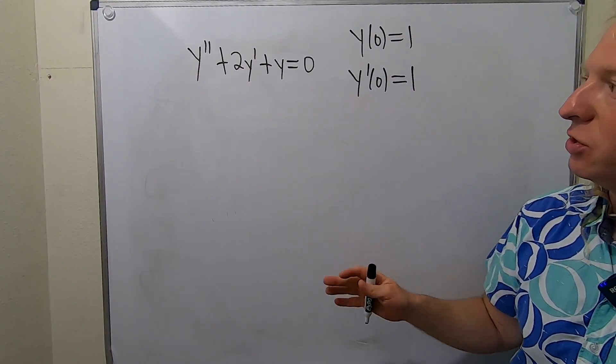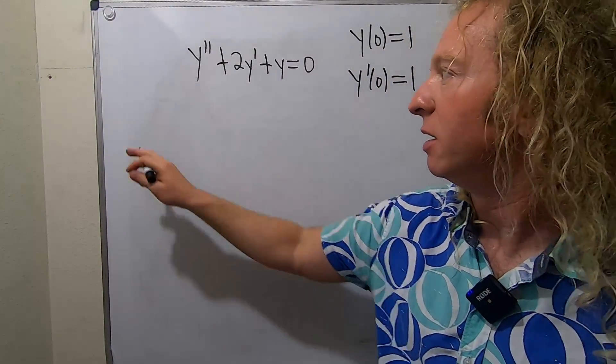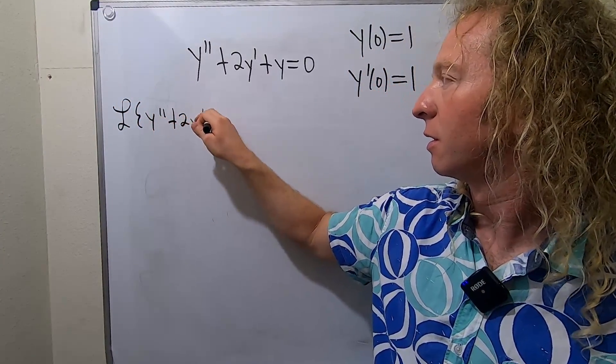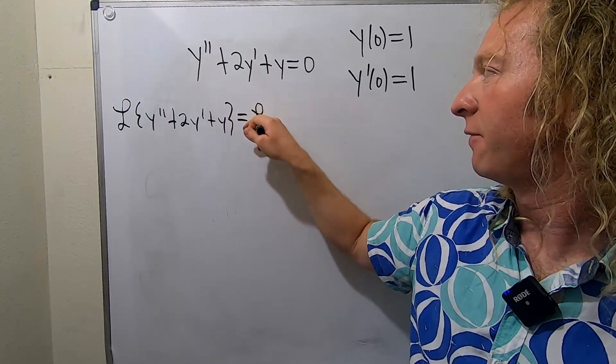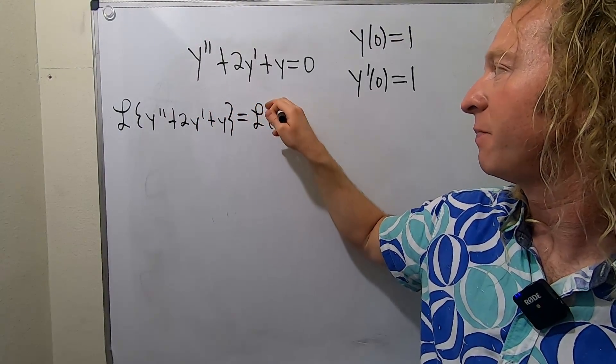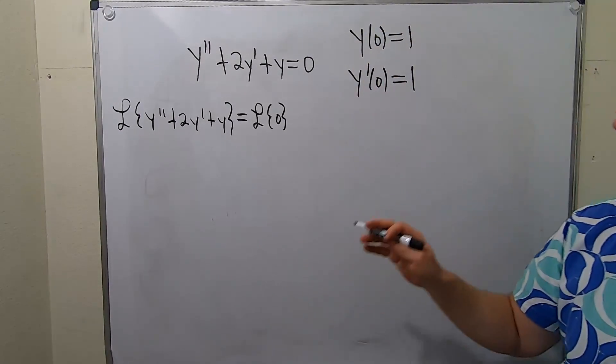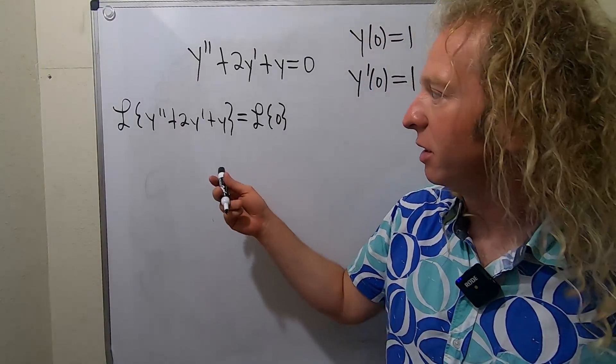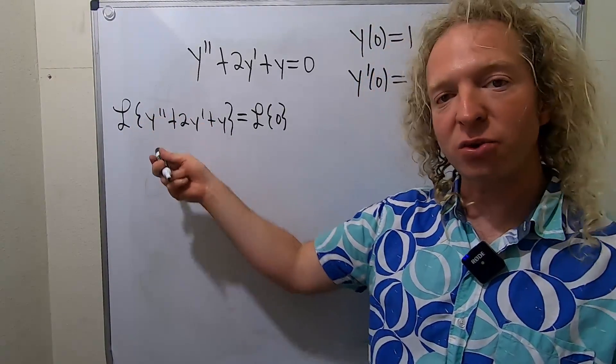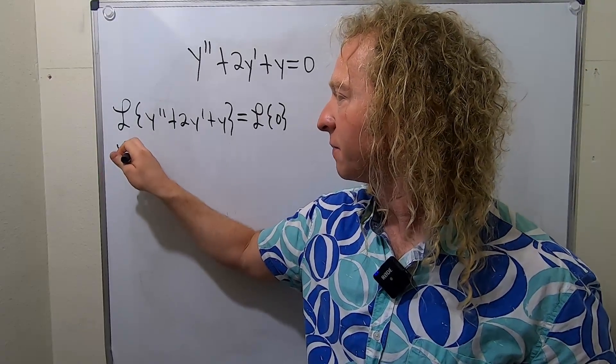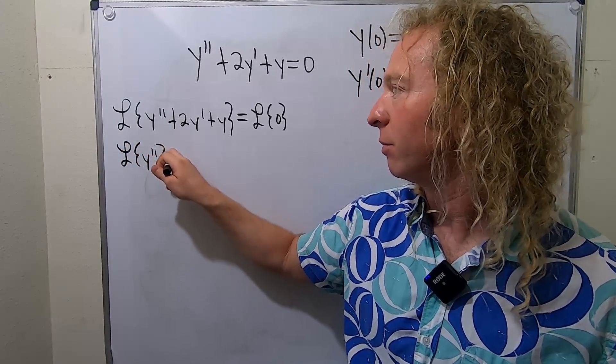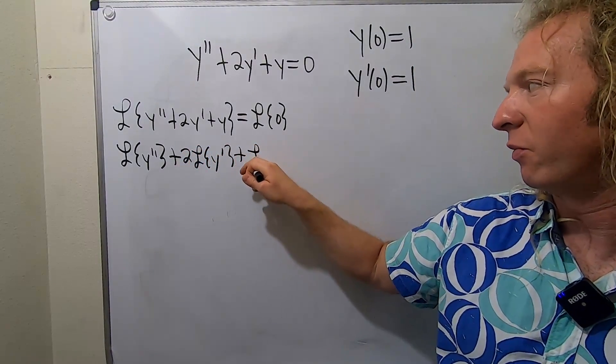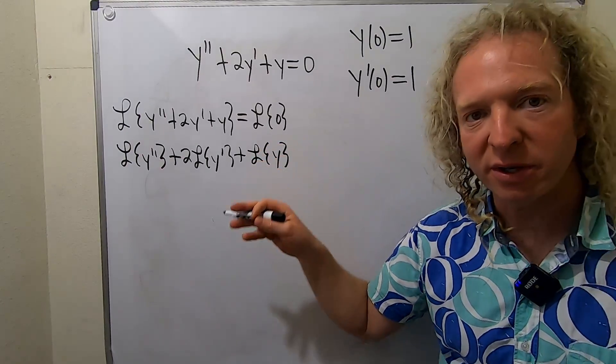So step one in this process is you take the Laplace transform of both sides of the DE. So we have a Laplace of the left hand side and then here we have the Laplace of zero. So the very first step is you always just take the Laplace transform of both sides. The next step is use the fact that the Laplace transform is linear. So basically you could actually skip this step and just take the Laplace transform of each little piece. So this is the Laplace of Y double prime plus two times the Laplace of Y prime plus the Laplace of Y and then the Laplace of zero is zero.